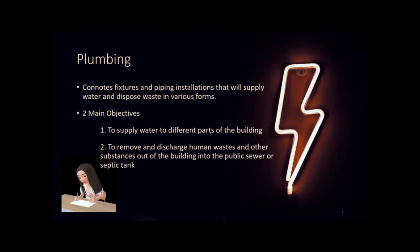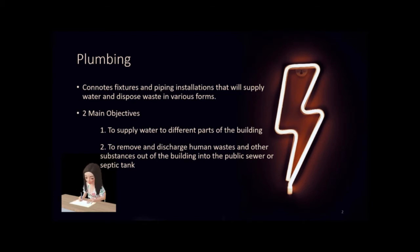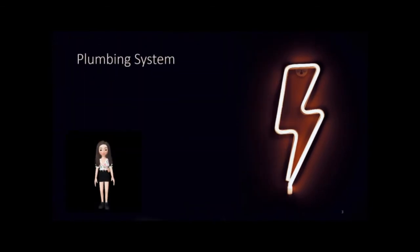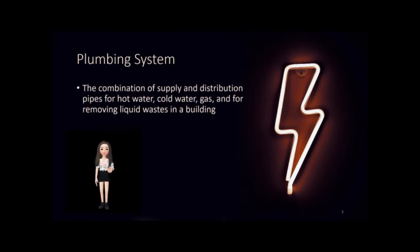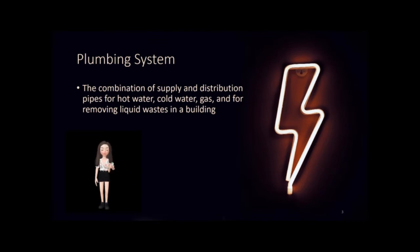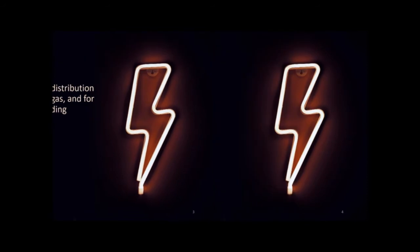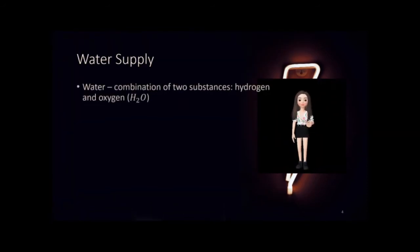By 'other substances,' it means that not only water is being discharged, but also gases and other materials which will be discussed later. The plumbing system is the combination of supply and distribution pipes for hot water, cold water, and gas, and for removing liquid wastes in a building. It also includes plumbing fixtures and traps, soil, waste and vent pipes, storm drainage pipes, house drain and house sewers, including their respective connections, devices, and appurtenances within the property lines of premises.